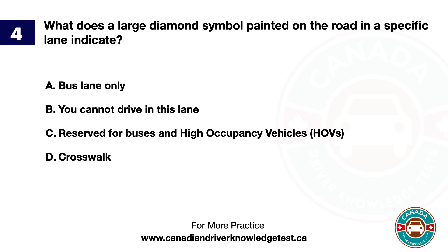Question 4. What does a large diamond symbol painted on the road in a specific lane indicate? A. Bus lane only. B. You cannot drive in this lane. C. Reserved for buses and D. High occupancy vehicles, HOVs. The answer is C. Reserved for buses and high occupancy vehicles, HOVs.